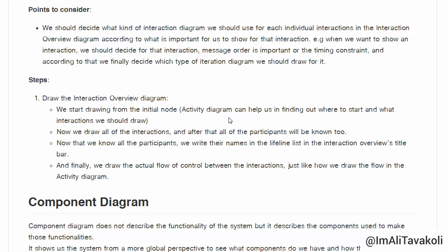Now, we draw all of the interactions, and after that, all of the participants will be known, too. Now that we know all of the participants, we write their names in the Lifeline list in the Interaction Overview's title bar. And finally, we draw the actual flow of control between the interactions. Just like how we draw the flow in the Activity Diagram.